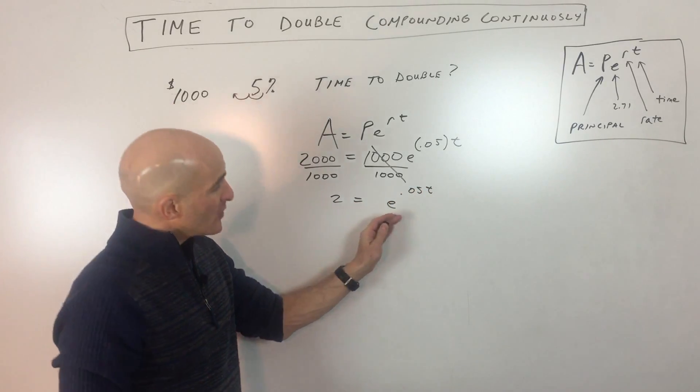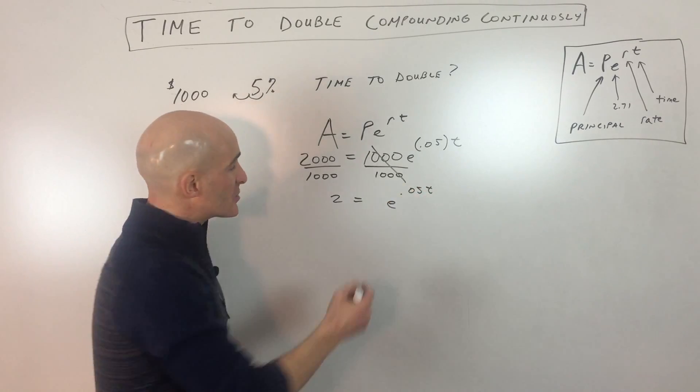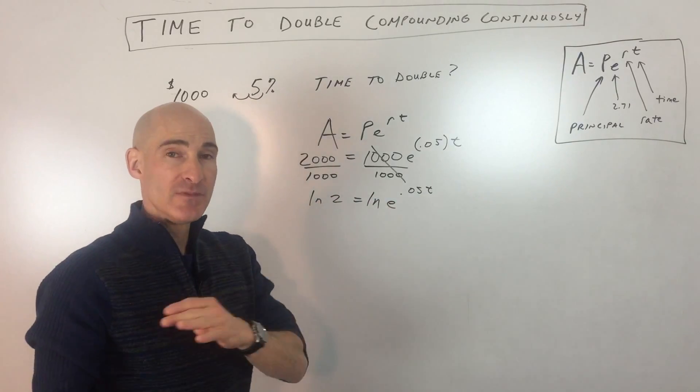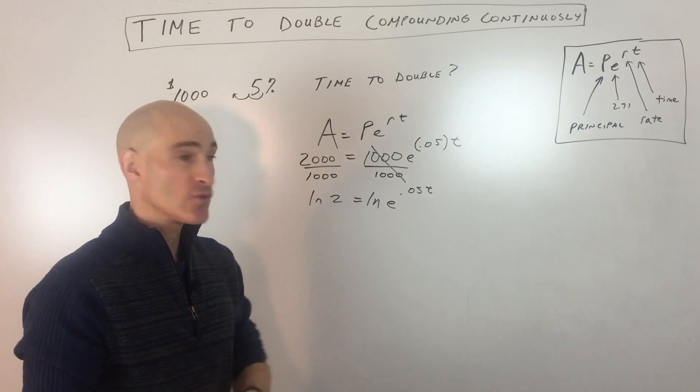We want to get that T by itself, but we can see that it's in the exponent position. It's up here as a power. So what we're going to do is we're going to take the natural log of both sides. Logs and exponential functions, they're inverses of one another. They undo or cancel one another out.